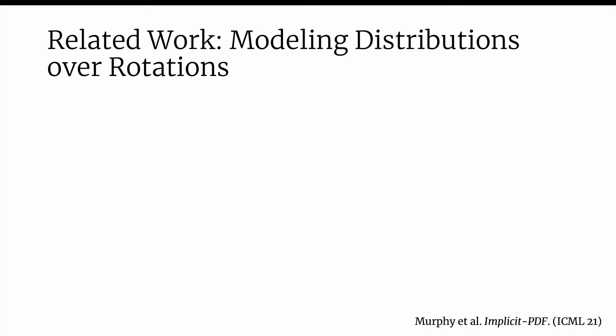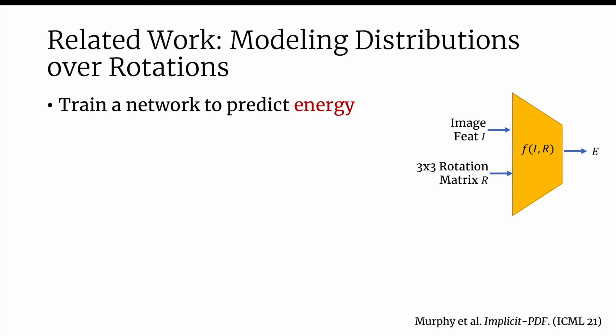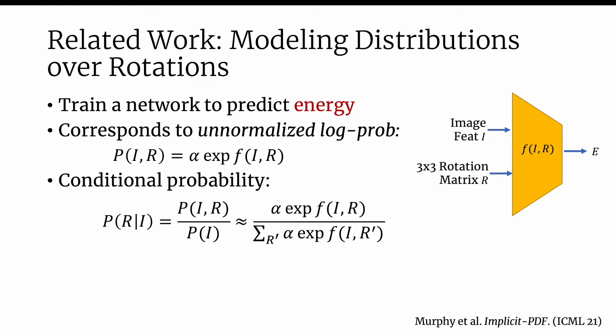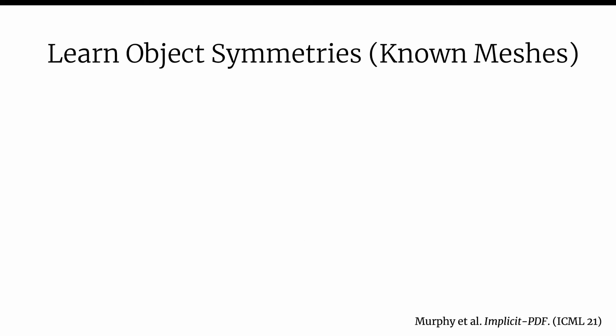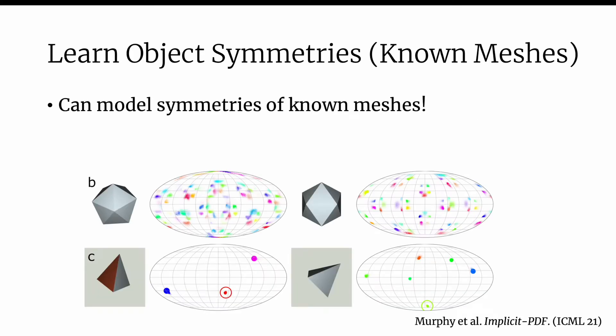To represent distributions over camera pose, we take inspiration from implicit PDF, which trains a network that predicts energy given an image and a rotation matrix. Since energy corresponds to unnormalized log probability, we can compute the conditional probability of a rotation matrix given an image by repeatedly querying the network with many rotations and marginalizing. A mesh-specific network can now model symmetries and pose distributions given a single image.